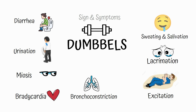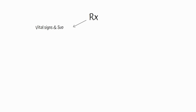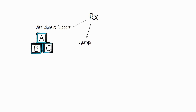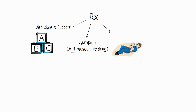Treatment involves securing vital signs and supporting the ABCs. To treat the muscarinic excess, we give atropine, which is an anti-muscarinic drug. To treat the nicotinic symptoms — mainly CNS excitation, muscle spasms, seizures, and fasciculations — we give diazepam, because there is no specific nicotinic antagonist available.